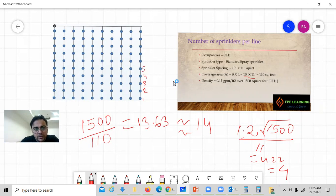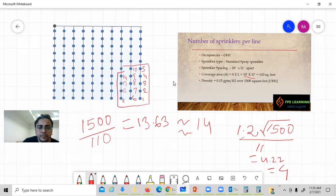We have total 14. So better to go with 1, 2, 3, 4 and here we have the last one, fifth. Start with here 6, 7, 8, 9, and 10. Then we have another four, starting from here again: 11, 12, 13, and 14. So we can say that these are our hydraulic remote areas.